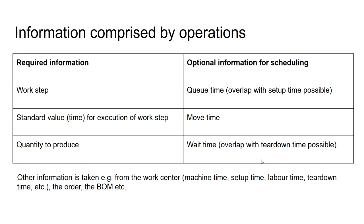There may also be a move time between work centers and between operations, which can be specified via the move time field. Wait time is a time required once the work piece leaves the work center — it may still be waiting at the exit of the work center, and this can overlap with teardown time. Other information such as machine time, setup time, and labor time are parameters that are typically taken from the work center, production order, or bill of material.